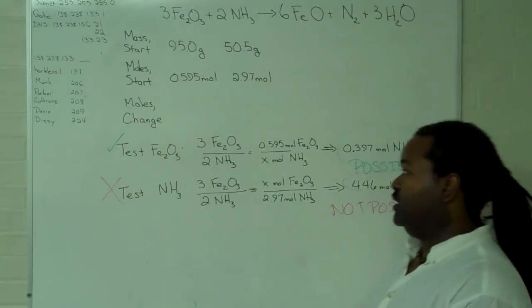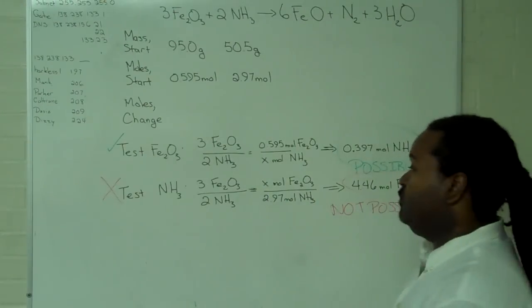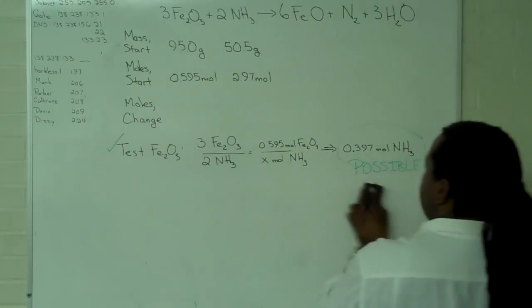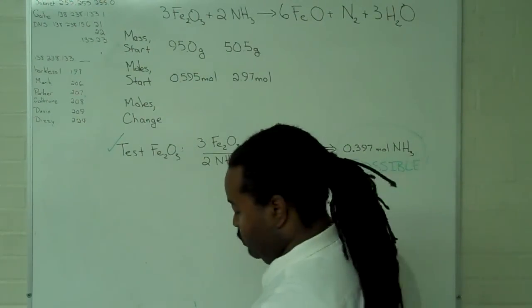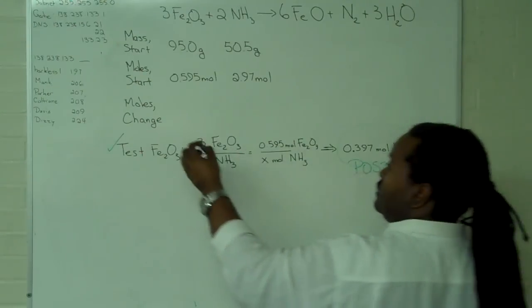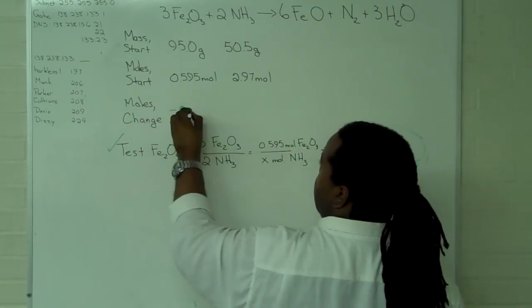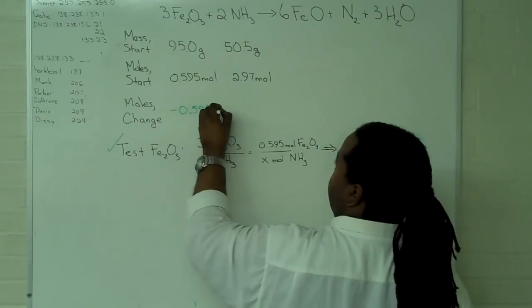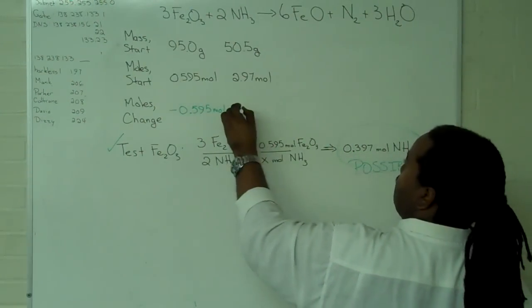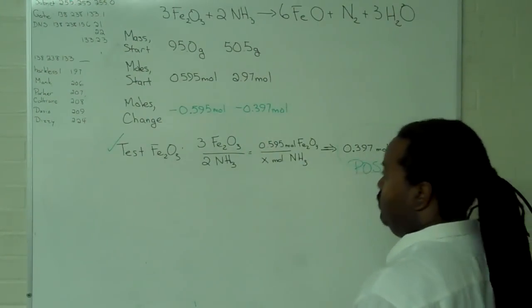Once we know which one is possible and which one is impossible, we can reject the one that cannot work and use the values we calculated from the one that will work to give us our change in moles. Because we're going to use up reactants, the sign is negative. Because the iron-3 oxide is the limiting reagent, it's used up completely, and we only use a portion of the ammonia.